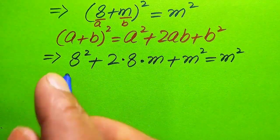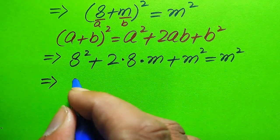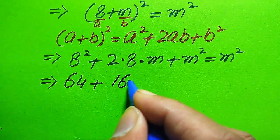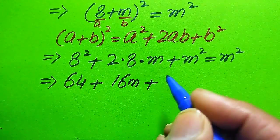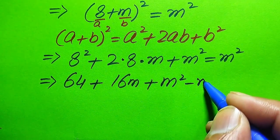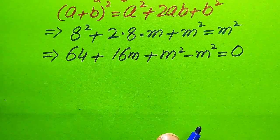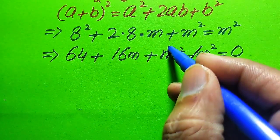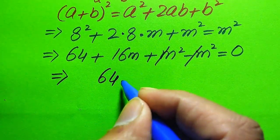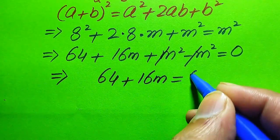With further simplification, 8² becomes 64, 2 times 8 becomes 16, so we have 64 plus 16m plus m². We move the m² to the left-hand side, giving minus m². The positive m² and negative m² cancel out, leaving 64 plus 16m equals 0.